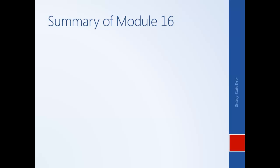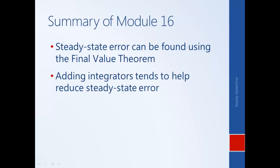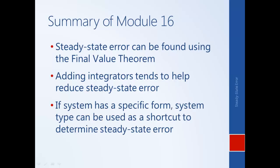This brings us to the conclusion of module 16. In this module we demonstrated how steady state error can be calculated using the final value theorem. We also demonstrated how adding integrators to either the controller or the plant helps reduce steady state error. Finally, we introduced the definition of system type, which can be used as a shortcut for determining steady state error, but only applies to unity feedback systems with the specific structure defined.